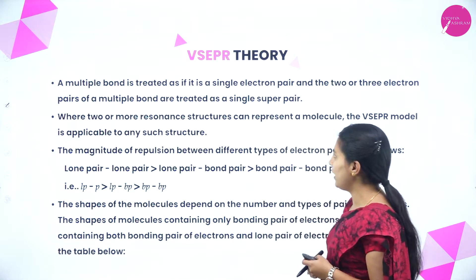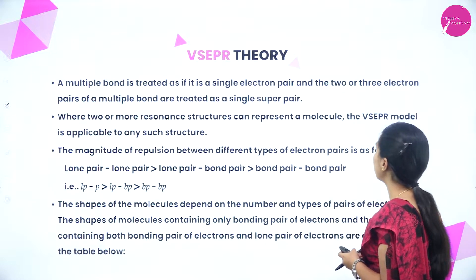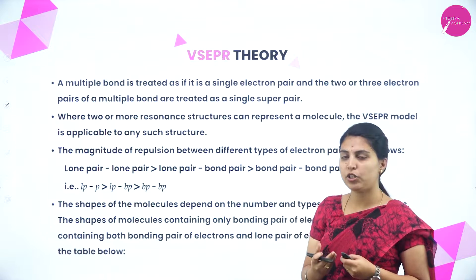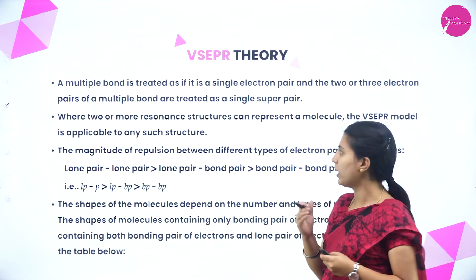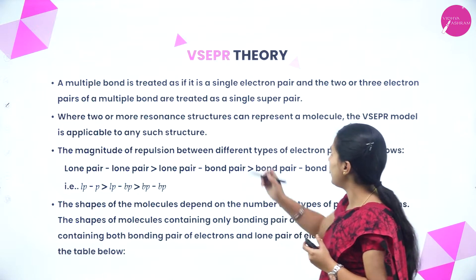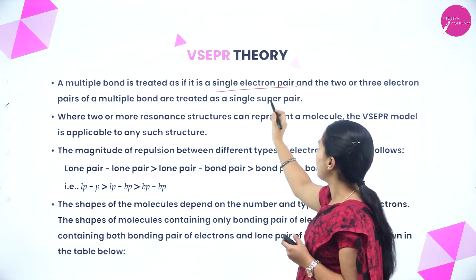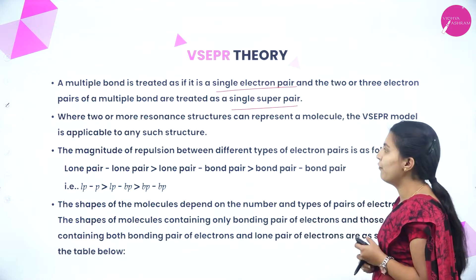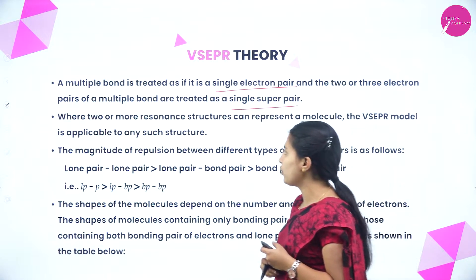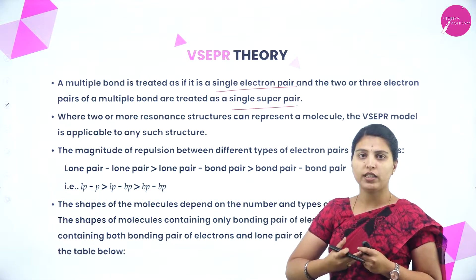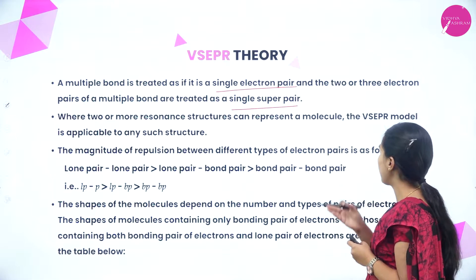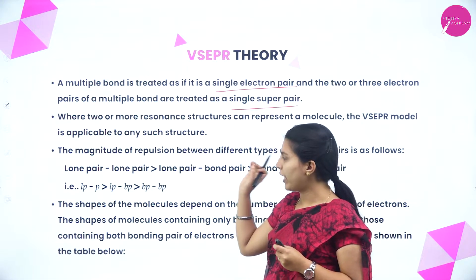A multiple bond is treated as a single electron pair, and two or three electron pairs of a multiple bond are treated as a single super pair. Where two or more resonance structures can represent a molecule, the VSEPR model is still applicable to any such structure, since resonance structures show delocalization of electrons.